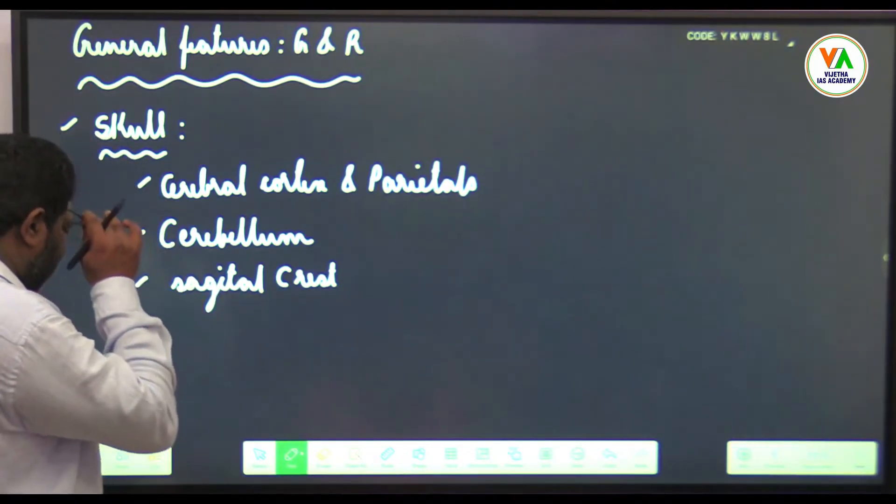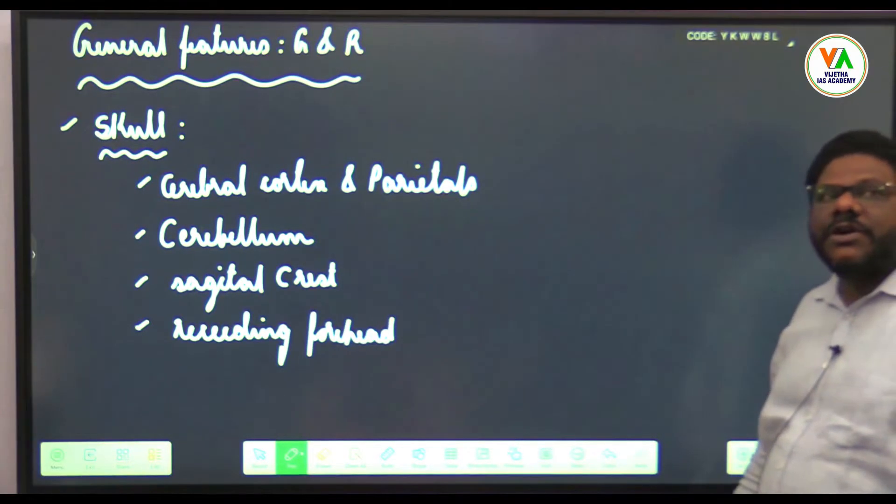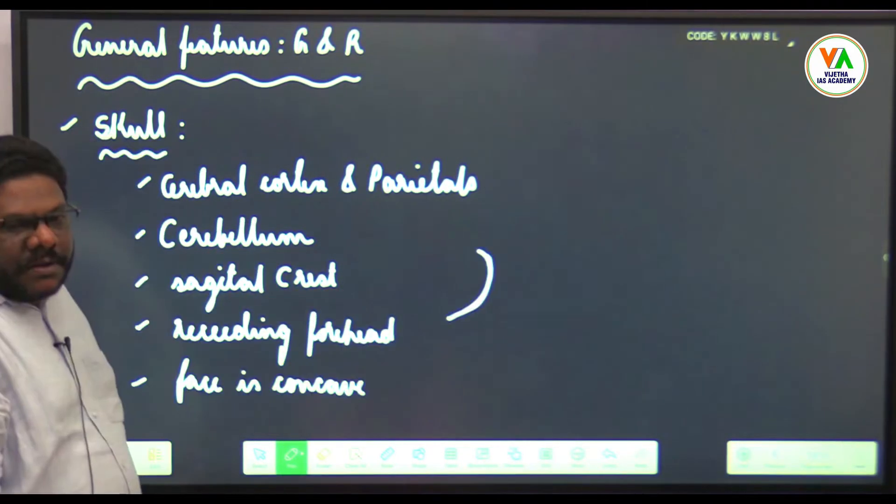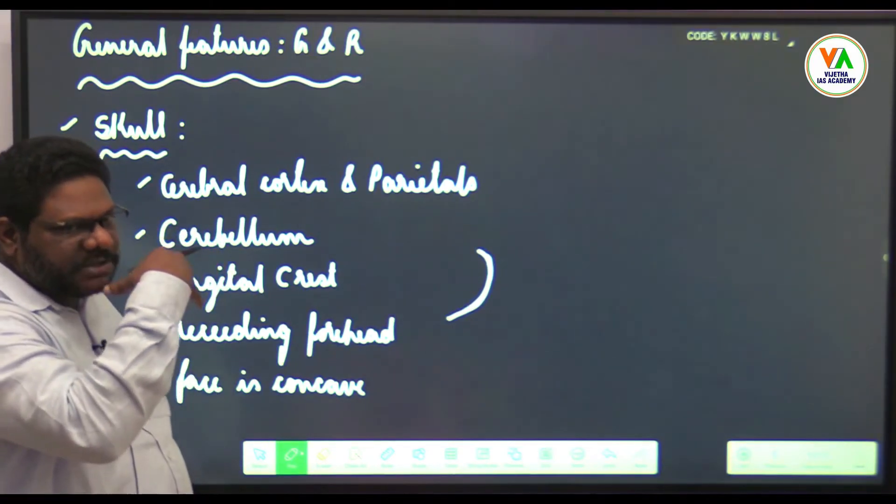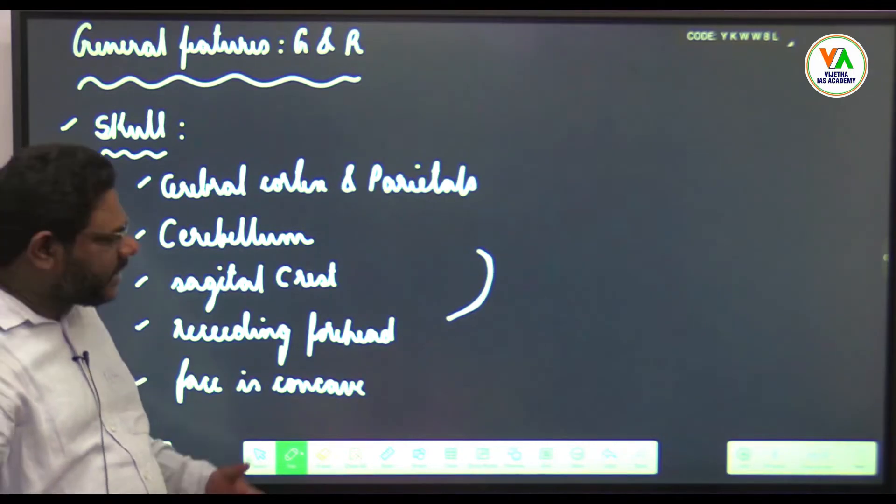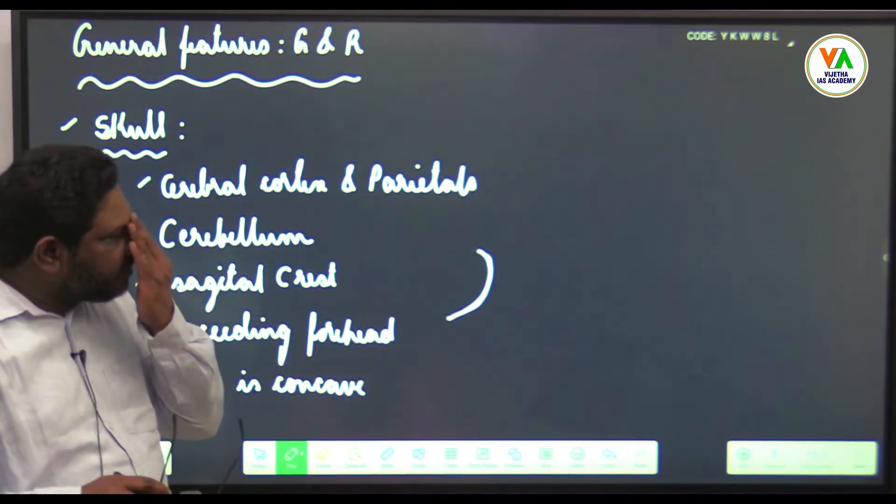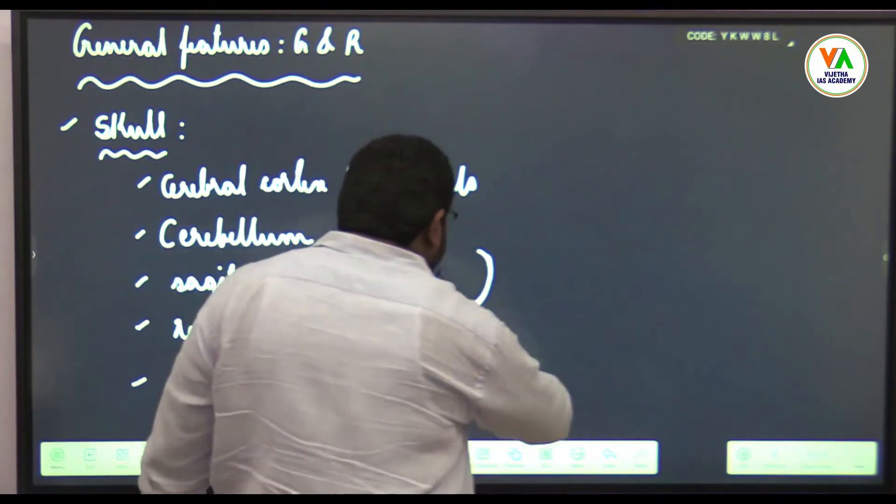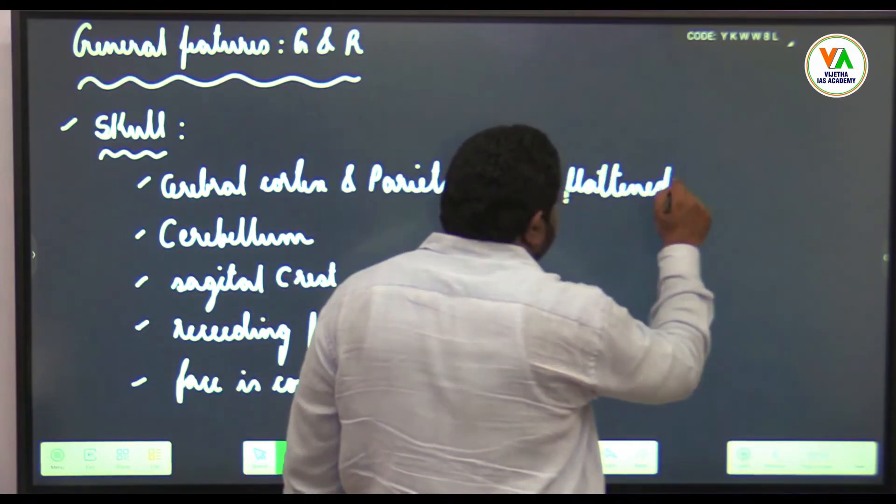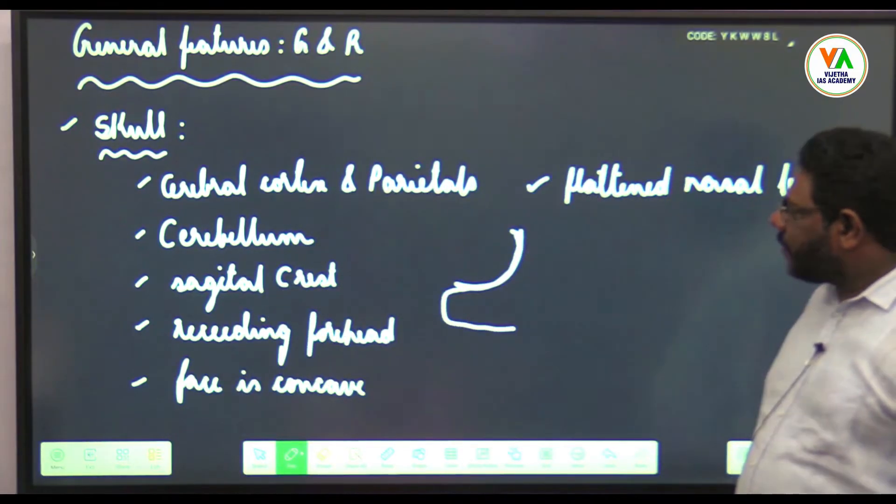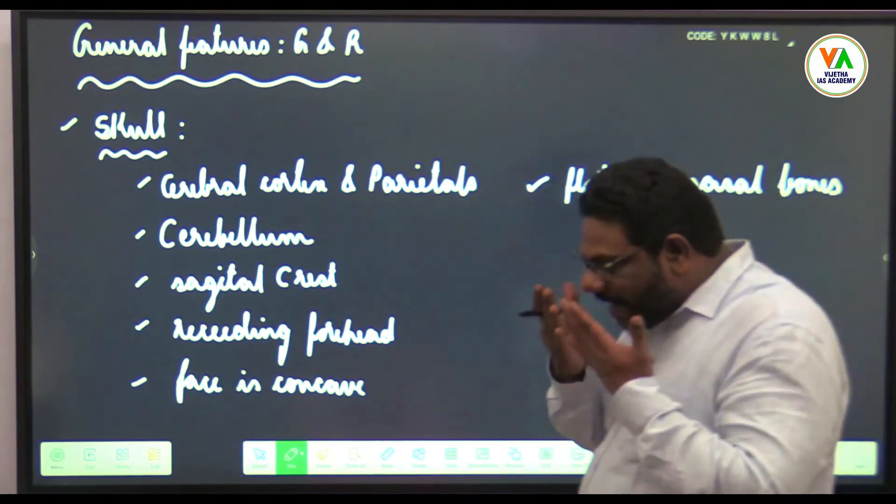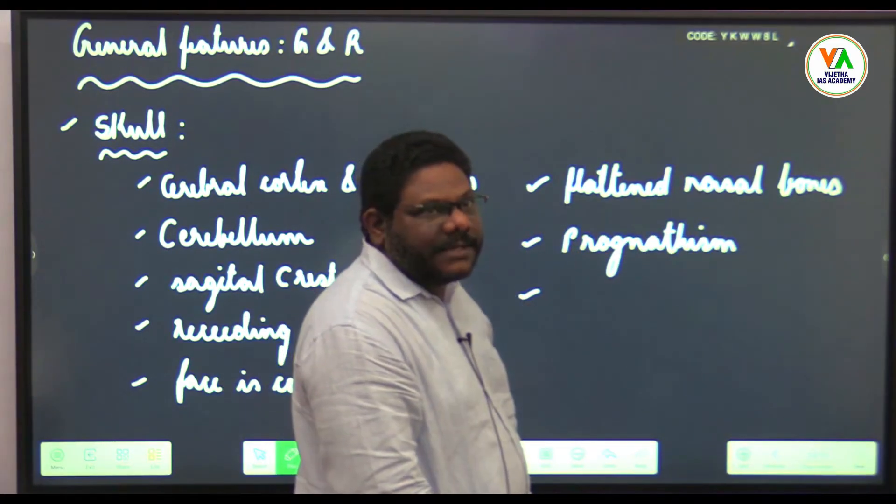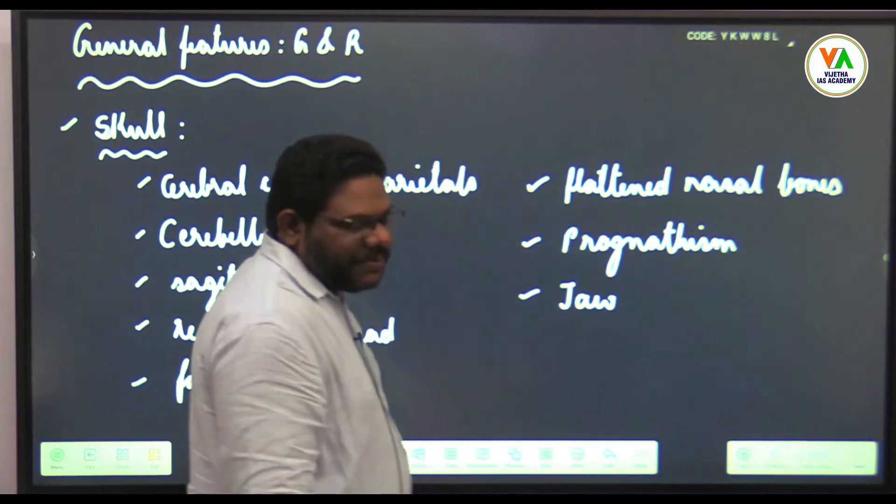Face is concave. When face is concave, this shows prognathism. Nasal bones are flattened. After flattened nasal bones, write prognathism is present. Jaw muscles are massive and thick.